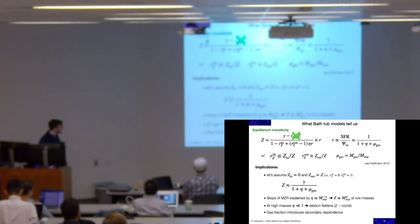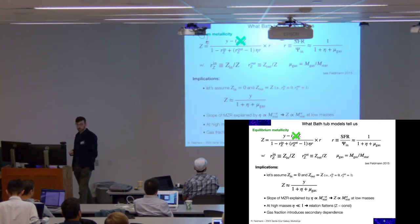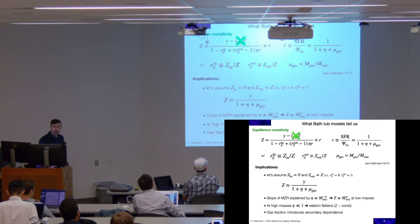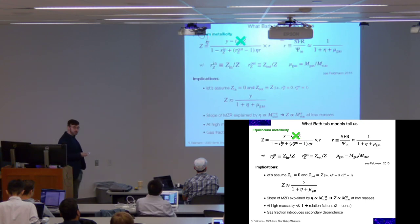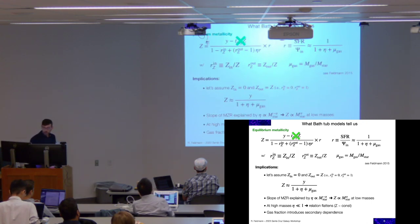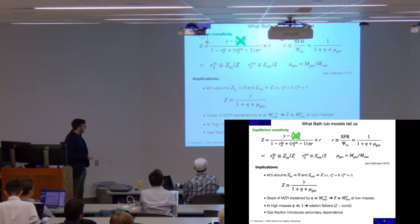This explains a lot. If the mass loading factor is a power law of stellar mass — so it gets stronger in lower-mass systems — then as long as eta is larger than one, Z scales like M_star to the alpha, giving a power law at the low-mass end. But once eta becomes much less than one, the constant term dominates, and you get a flattening of the relation at the massive end. So you qualitatively reproduce the observed mass-metallicity relation. There's also an additional term which introduces a secondary dependence.